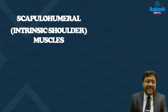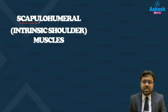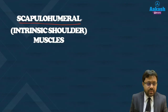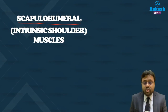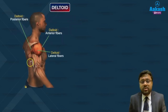Moving on to the intrinsic shoulder muscles, termed as the scapulohumeral muscles. In a previous session we talked about the extrinsic shoulder muscles, which were termed as the posterior axial appendicular muscles, organized in two groups: superficial and deep. Now we come to the intrinsic shoulder muscles.